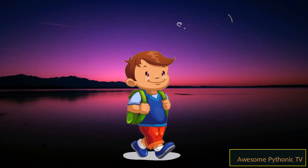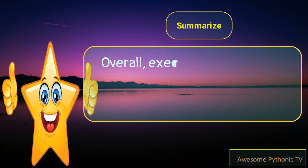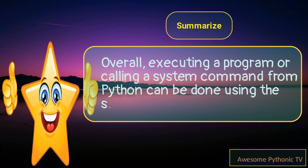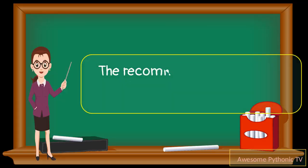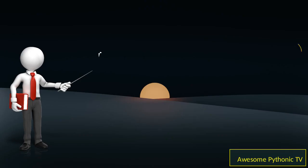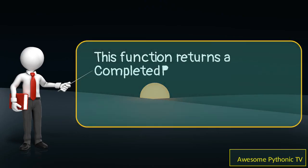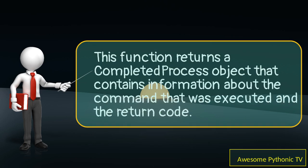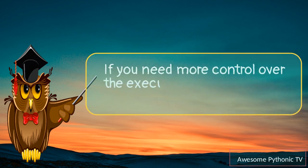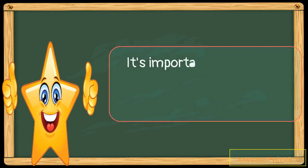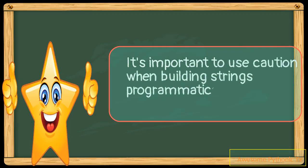Overall, executing a program or calling a system command from Python can be done using the subprocess library. The recommended approach is to use the run function for all use cases it can handle, which returns a CompletedProcess object with information about the command and return code. If you need more control, Popen can be used instead. It is important to use caution when building strings programmatically to prevent security issues.